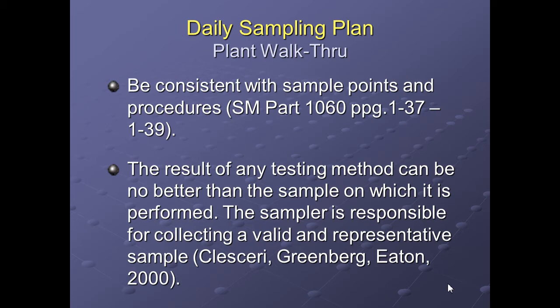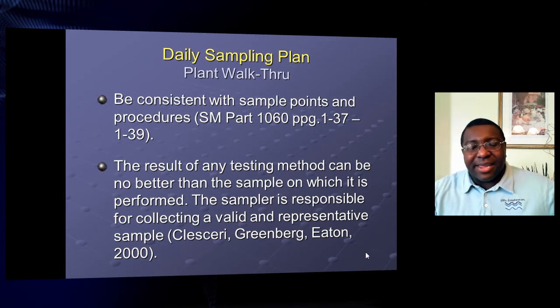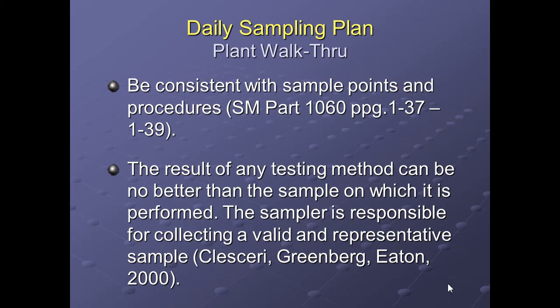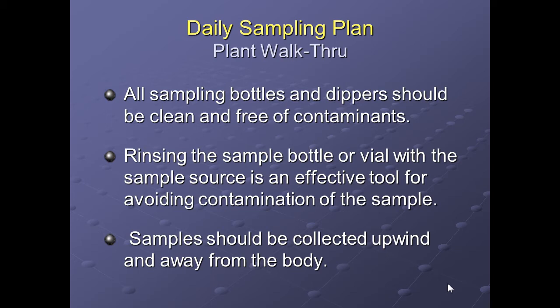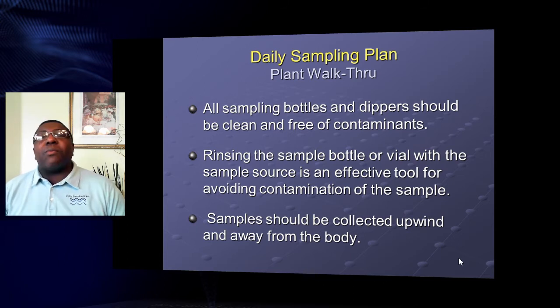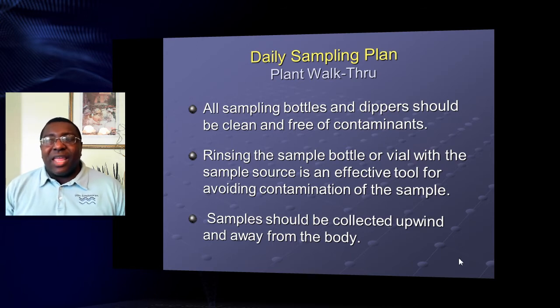Observe conditions in process areas while sampling. If something is out of the ordinary — unusual heat, cold, construction dust — write it on your sample sheet, because it may explain why a sample reads abnormally. Be consistent with your sample points; this is noted in Standard Methods Part 1060. An important statement from that section: the result of any test method can be no better than the sample on which it was performed. The sampler is responsible for collecting a valid and representative sample.